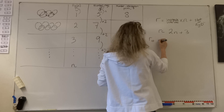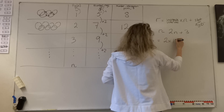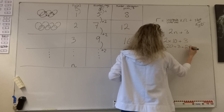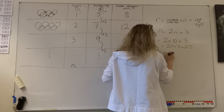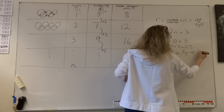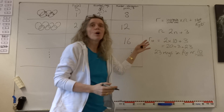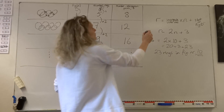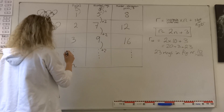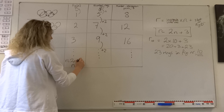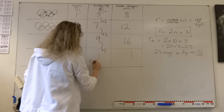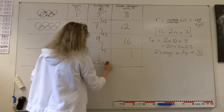So working out how many rings are in figure number 10 is quite easy. Rings in figure number 10: R = 2n + 3, so R = 2 times 10 plus 3 = 20 plus 3 = 23. There are 23 rings in figure number 10. So we now have this very useful formula for the number of rings: R = 2n + 3.